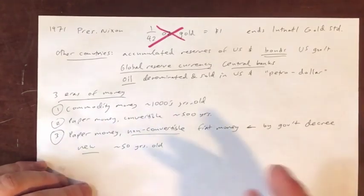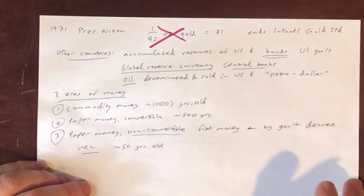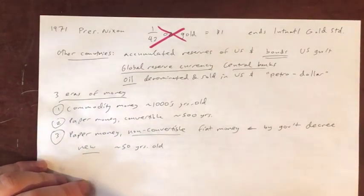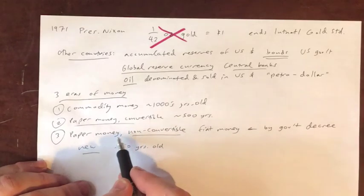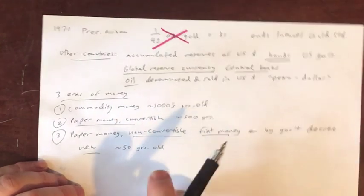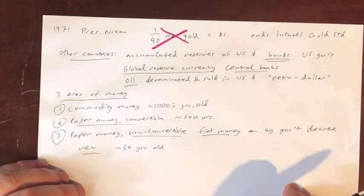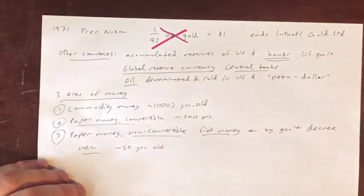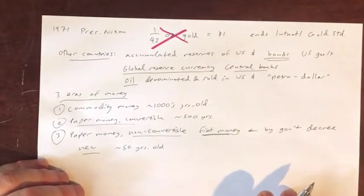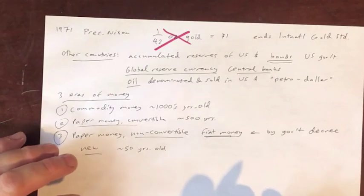Believe it or not, Keynes had a lot to do with this. Though he lived and wrote mostly in the 1920s and 1930s and died shortly after Bretton Woods, Keynes developed a lot of the theory we use today. Keynesian economists and their followers had a lot to say about how fiat money operates. That's what we'll turn our attention to next — the mechanics of how this all works.